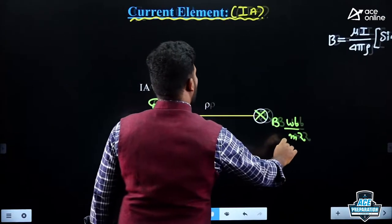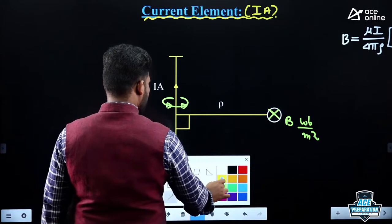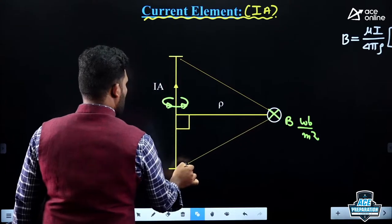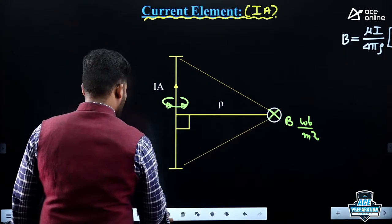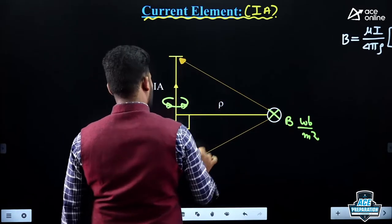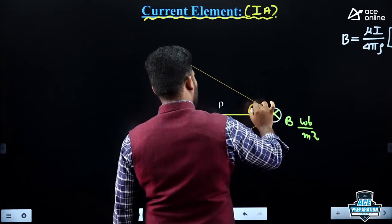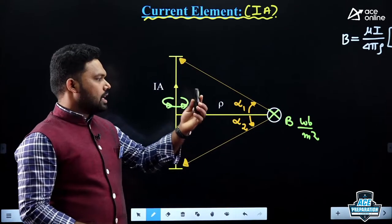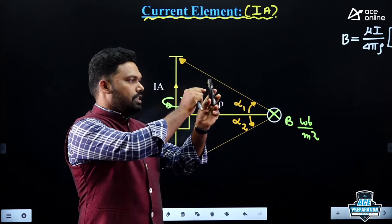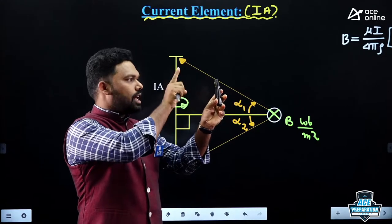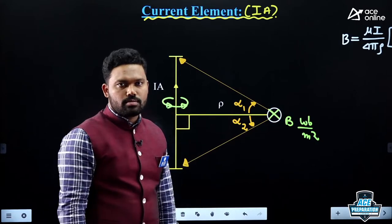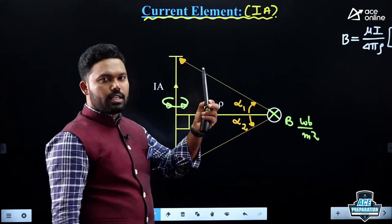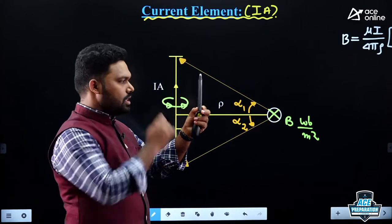To clarify: ρ is the perpendicular distance from the conductor to the point of interest. α₁ and α₂ are the angles subtended at that point by the two ends of the finite conductor. The magnetic field intensity H (also called magnetizing force) is given by H = I / (4πρ) · (sin α₁ + sin α₂), with units of ampere per meter. The formula must be remembered — questions based on this concept appear frequently in the exam.